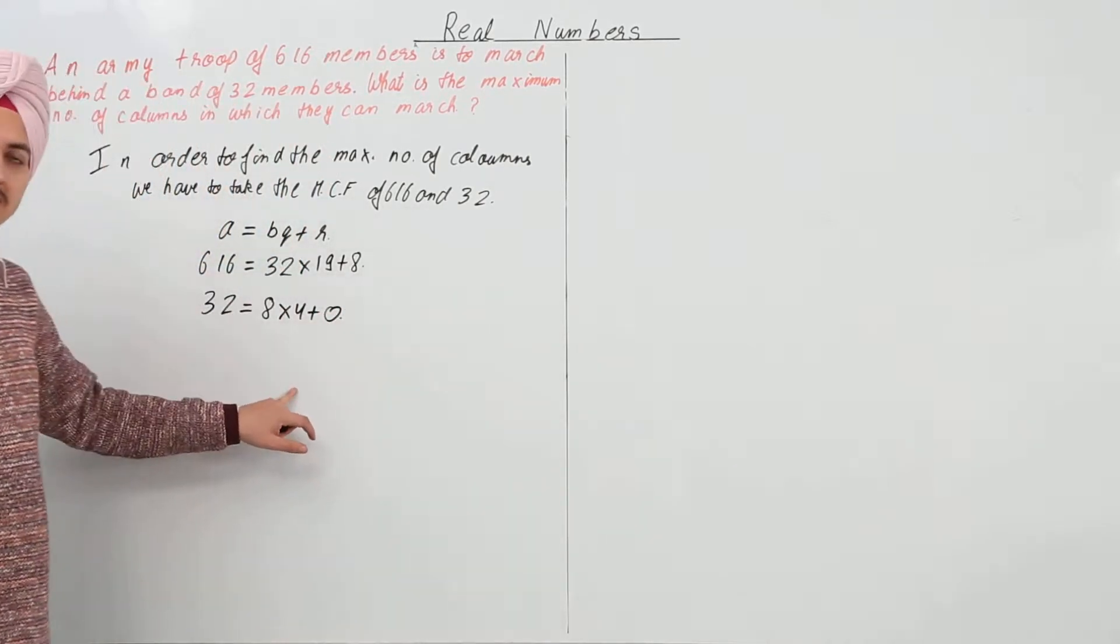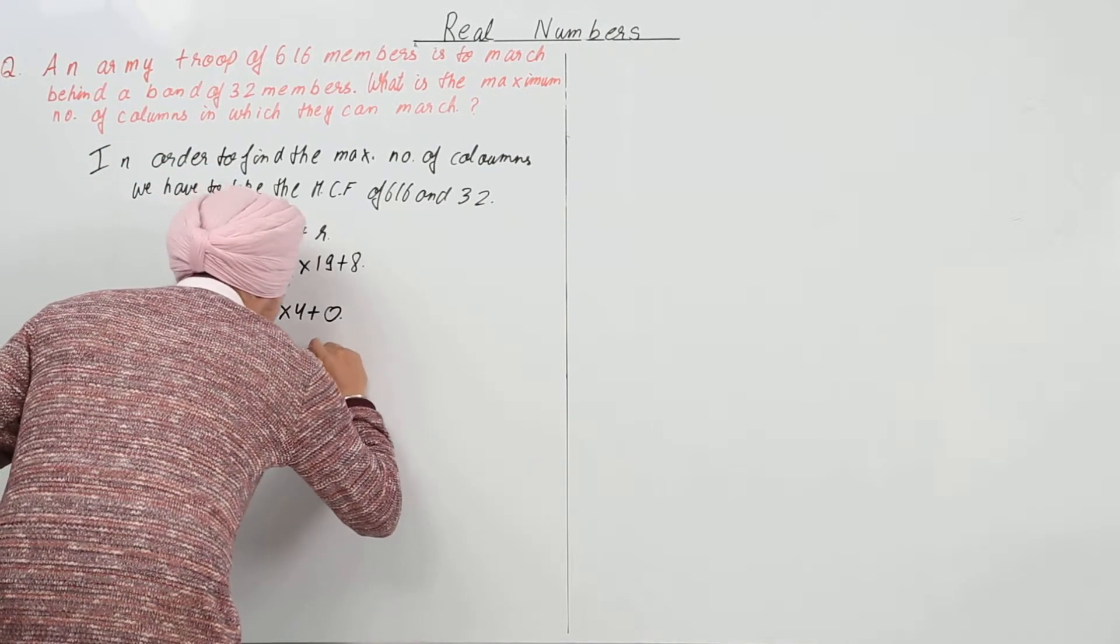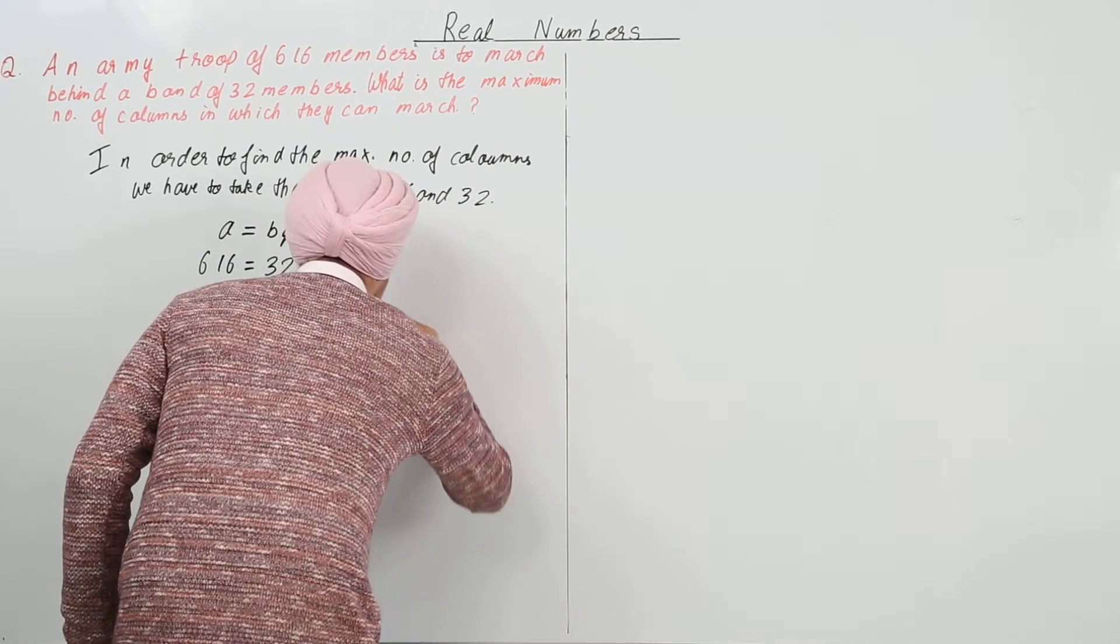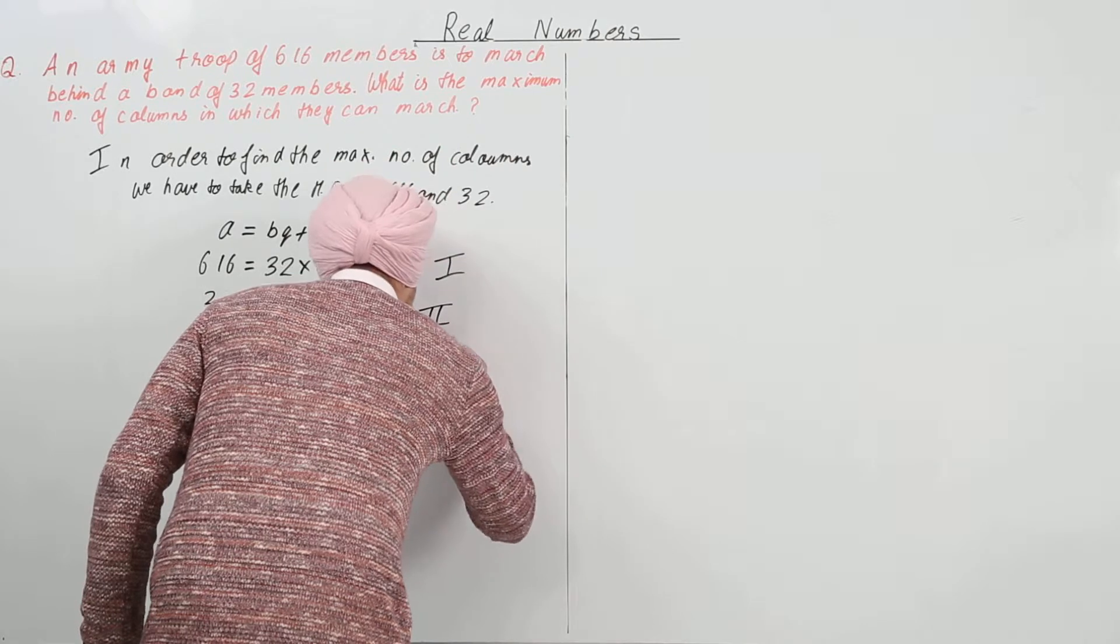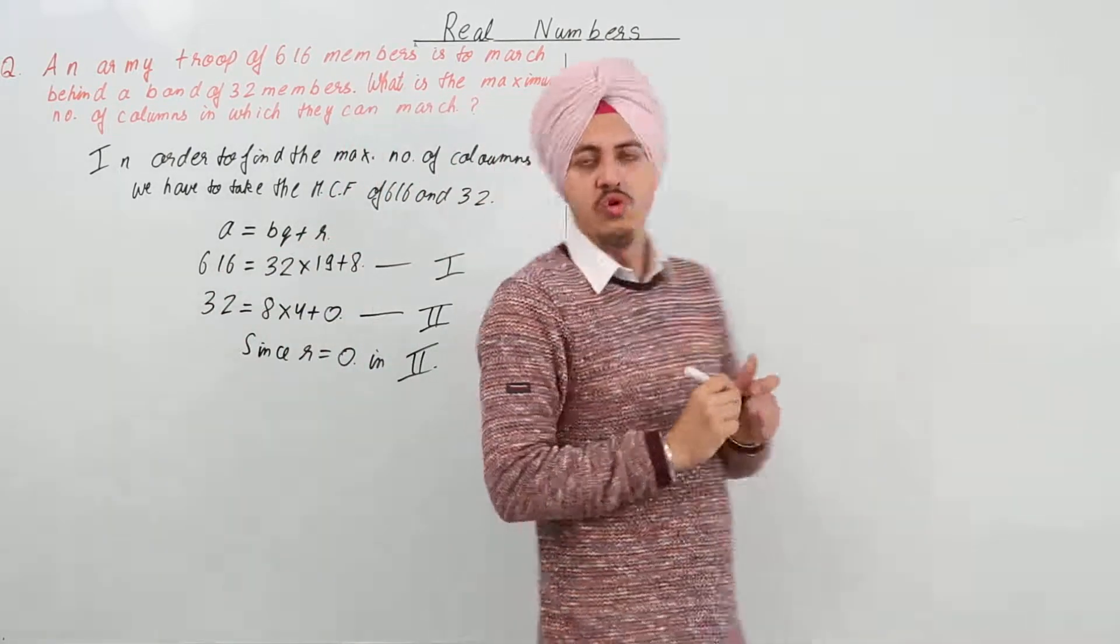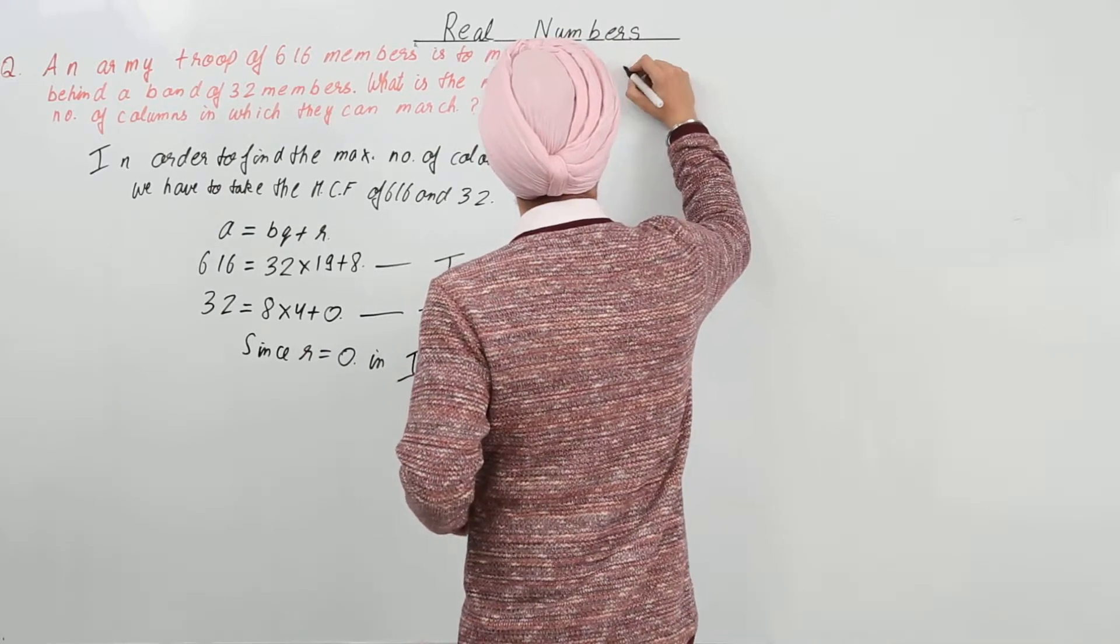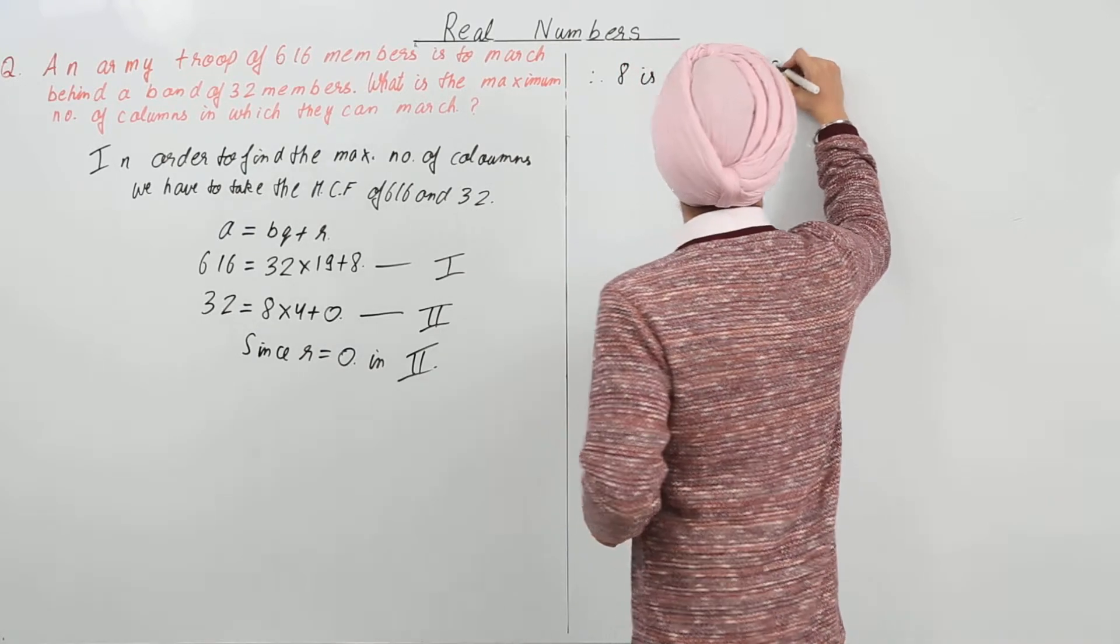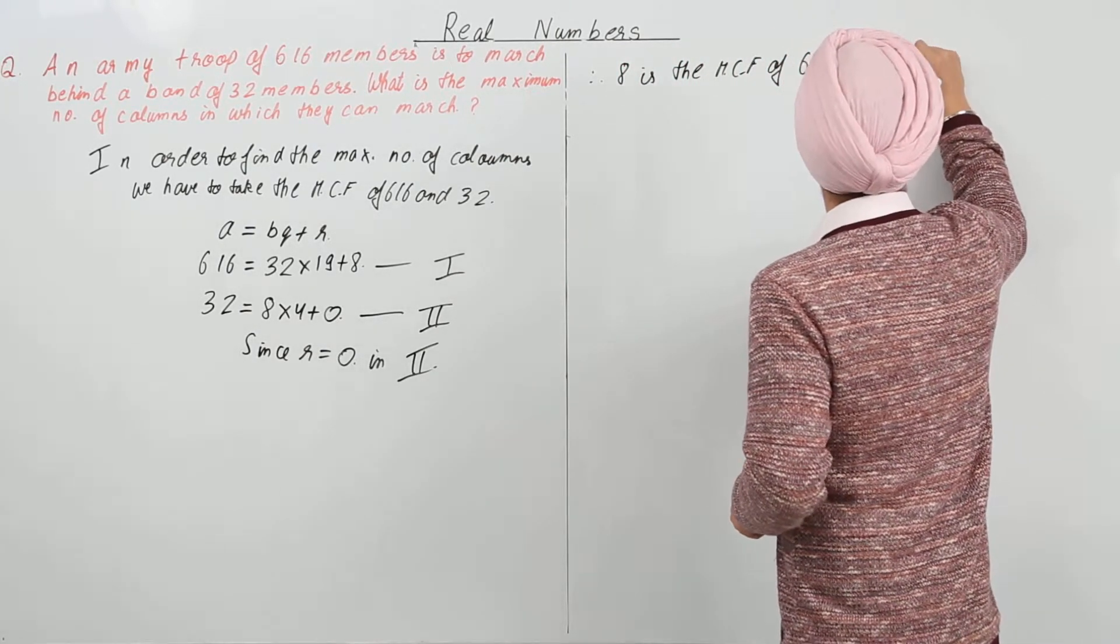From here we know that now R, now since R is equal to 0 in equation 2, therefore it is the HCF of 616 and 32.